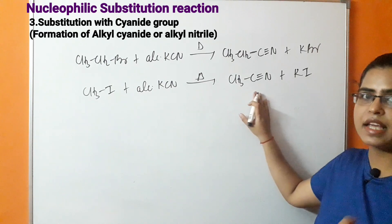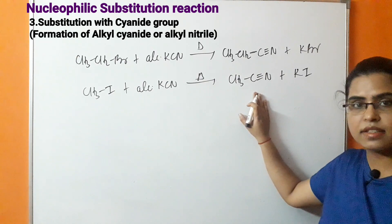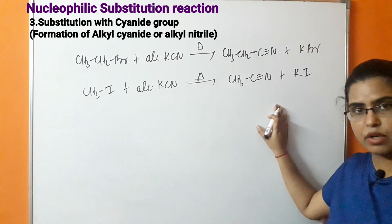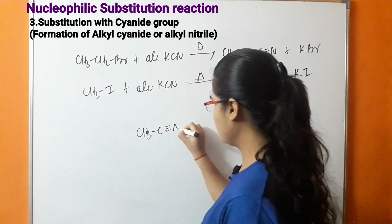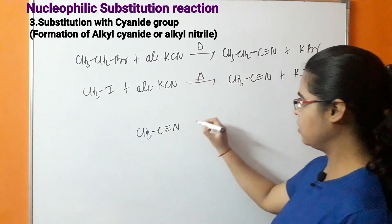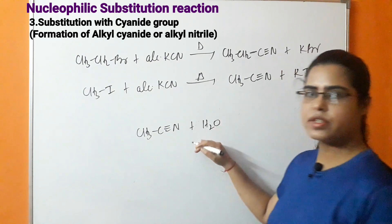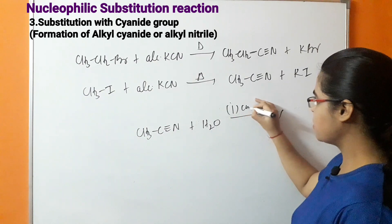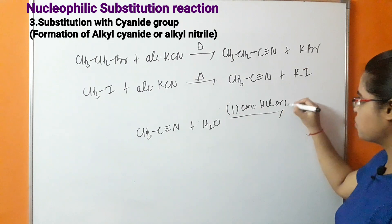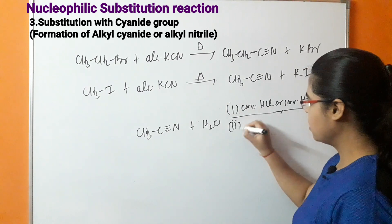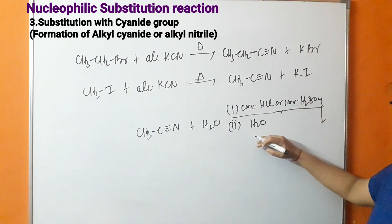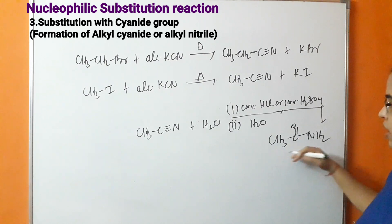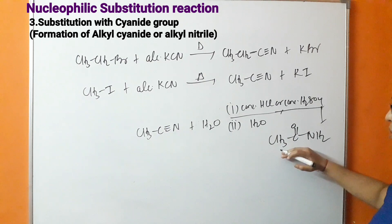For example, we can convert alkyl cyanide into amide, carboxylic acid, and amines. In the presence of ethane nitrile, partial hydrolysis takes place in the presence of concentrated HCl or concentrated H₂SO₄, and then further hydrolysis with water takes place. This results in the formation of acetamide — ethane amide, its common name being acetamide.